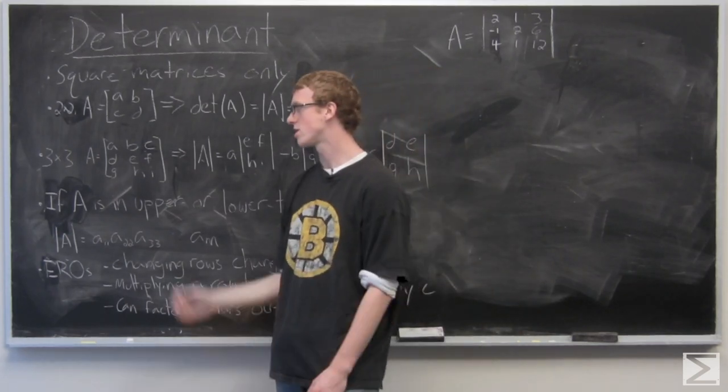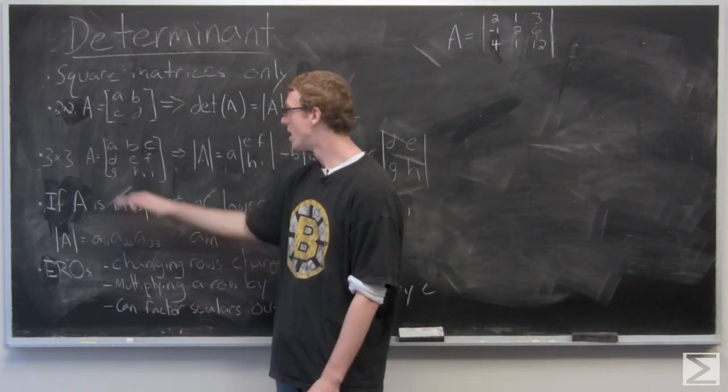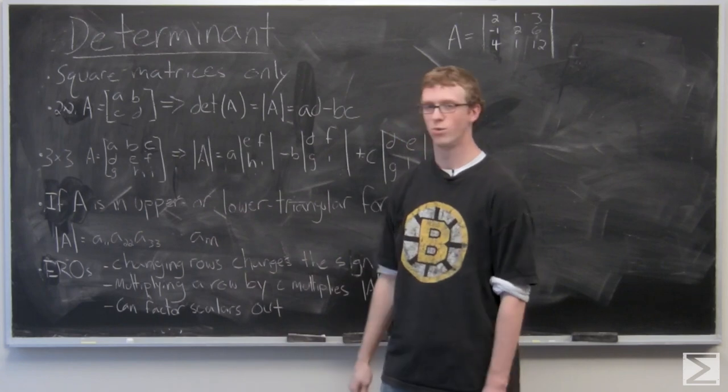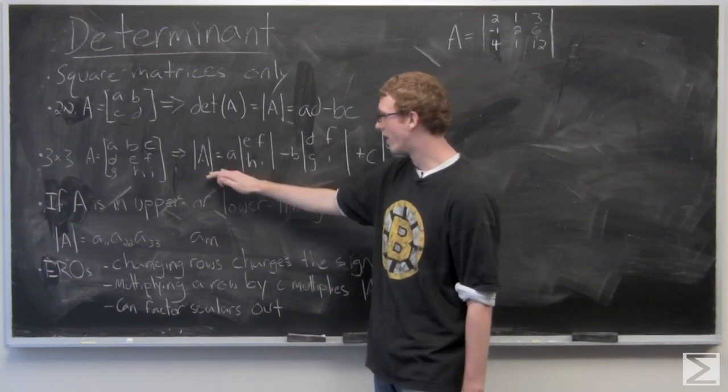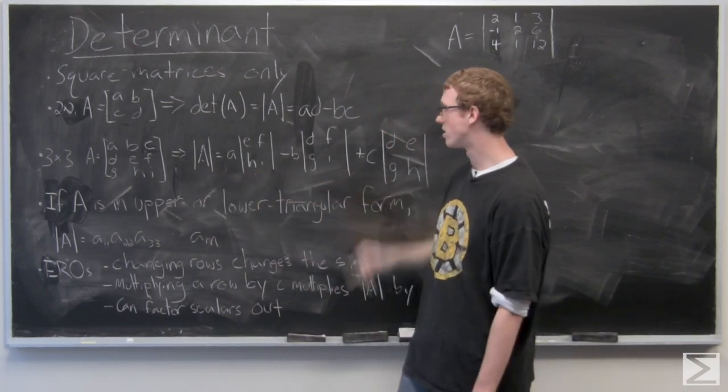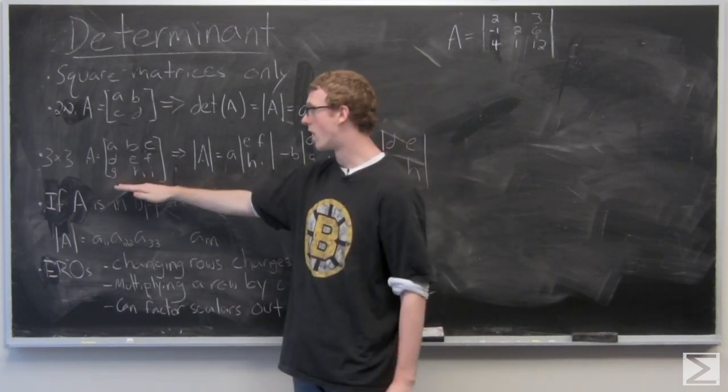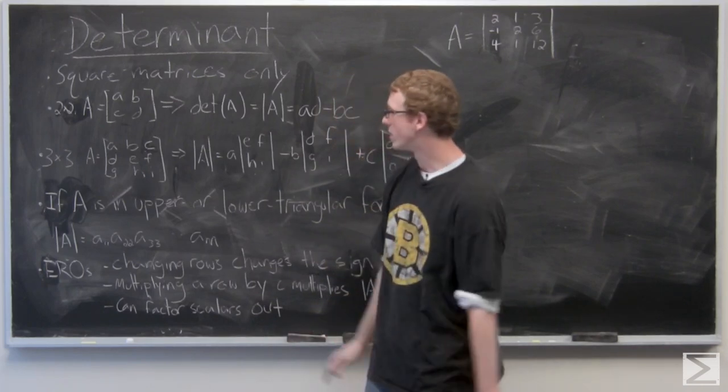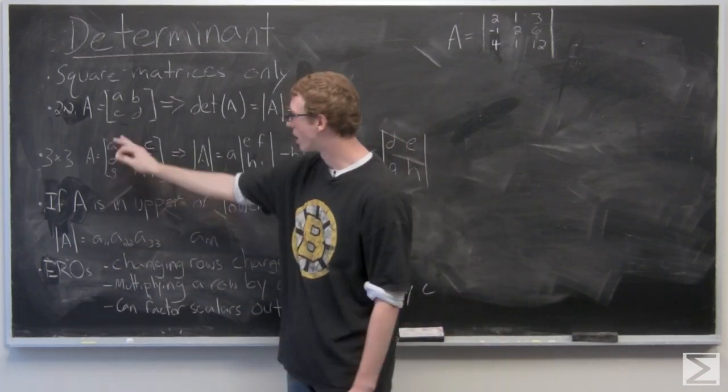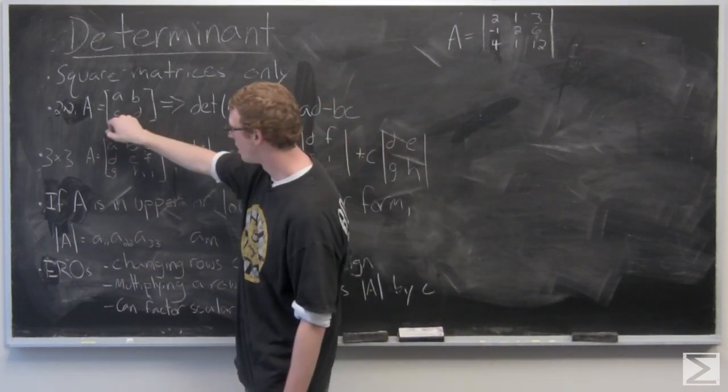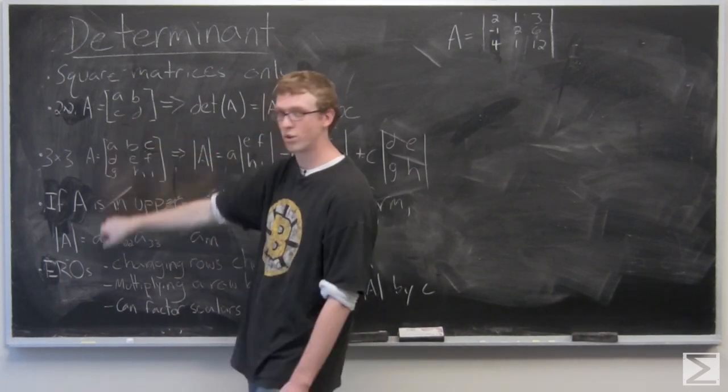For a 3x3 matrix, it's a little bit more complex. Essentially what you do is you remove the first row. So you have A, negative B, positive C. And then you have the 2x2 matrices that are on the bottom two rows. So when you take out A, essentially what you're doing is crossing out the top row and the leftmost column.